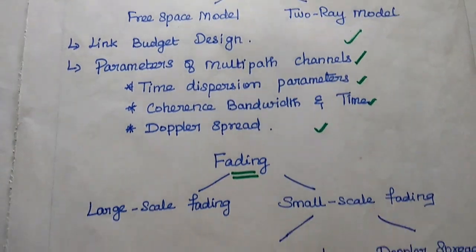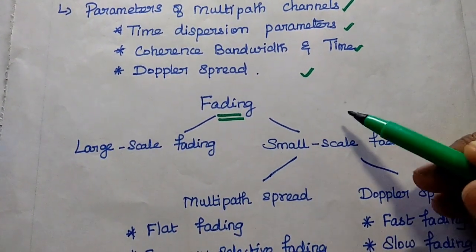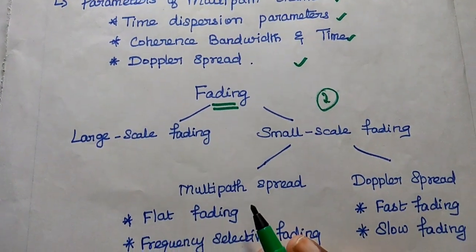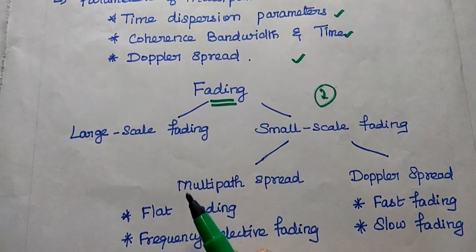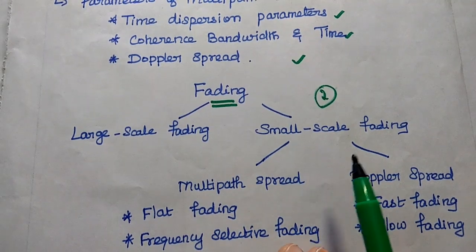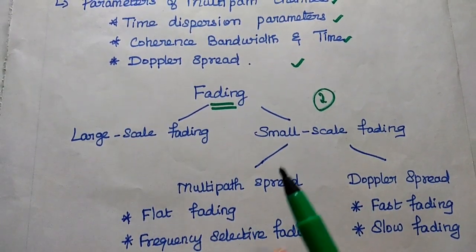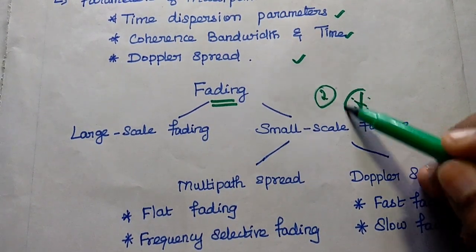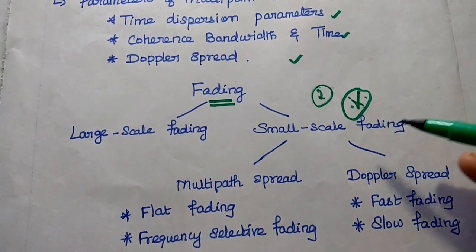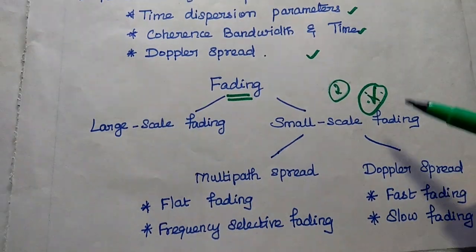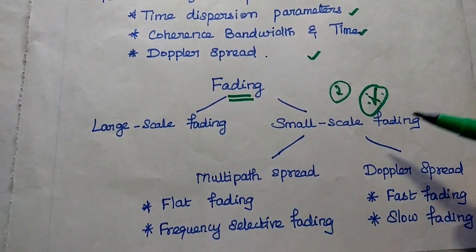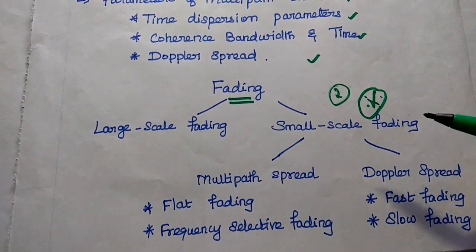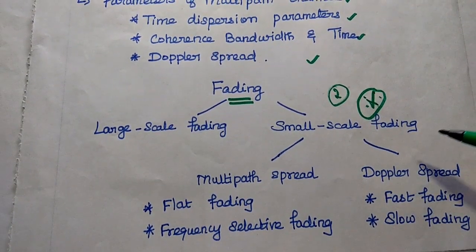The second important topic in Unit 1 is fading. There are two types of fading: large scale fading and small scale fading. Small scale fading is an important topic and we can expect questions from it. In this unit, concentrate more on path loss models like the free space model and two ray model.